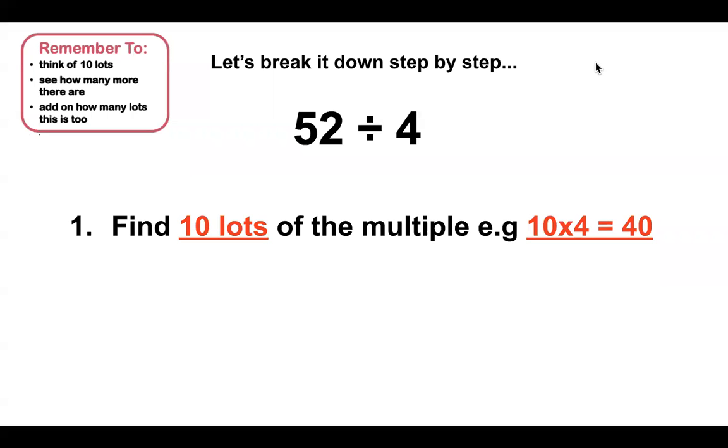Let's break it down step by step, this time dividing by 4. Our first step is to find 10 lots of the multiple that we are dividing by. This time we are dividing by 4, so we need to find 10 lots of 4, which will be 40.